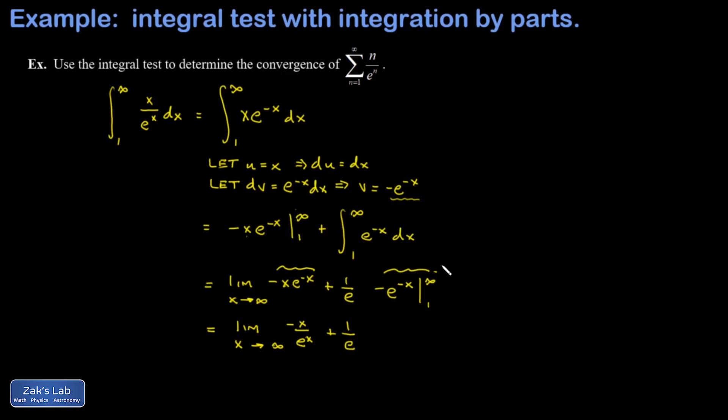In the lower limit I subtract that term, giving me a positive e to the negative one or one over e. Finally I get back to cleaning up this first term and I use L'Hôpital's rule for that.